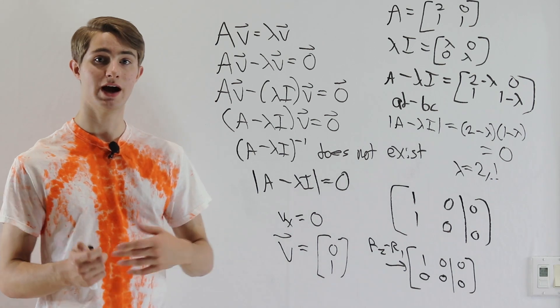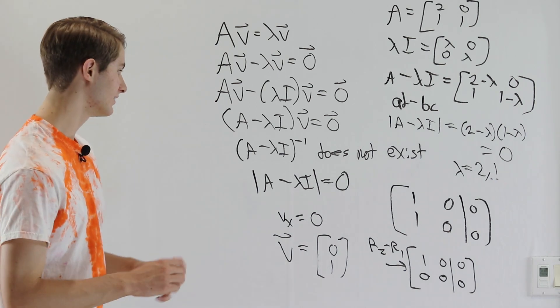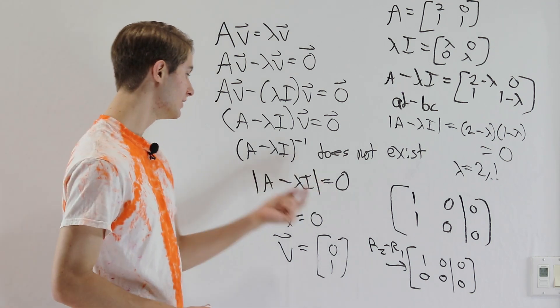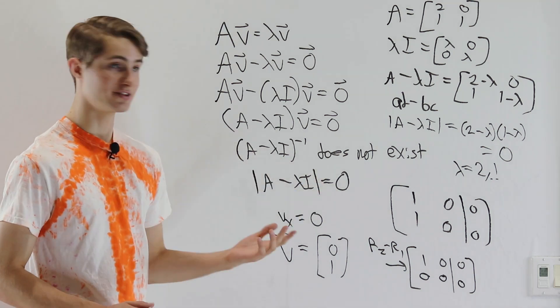So that's the basics of how to find eigenvectors and eigenvalues. You use the formula determinant of A minus lambda I equals 0 to make sure that this inverse does not exist. Find your eigenvalues and then solve for the vectors with Gauss-Jordan elimination.